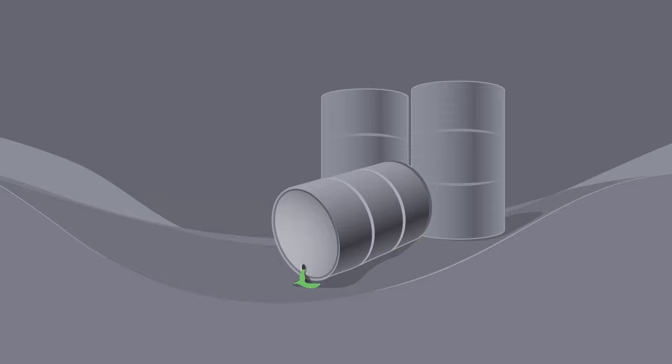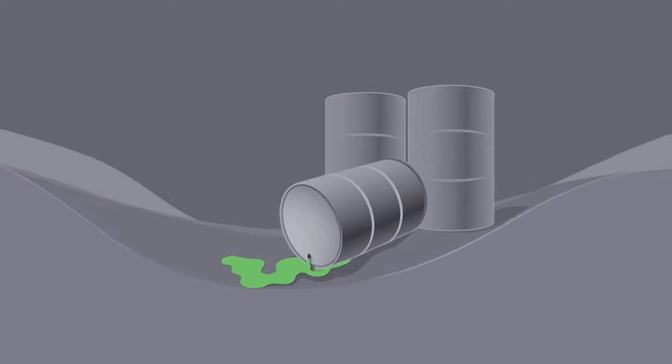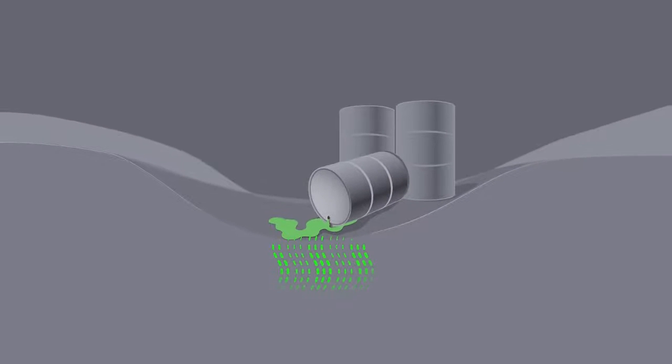TCE that is spilled or disposed of on soil, or that leaks from storage tanks, can contaminate the soil around it. It evaporates less easily from soil and may stick to soil particles and remain for a long time.